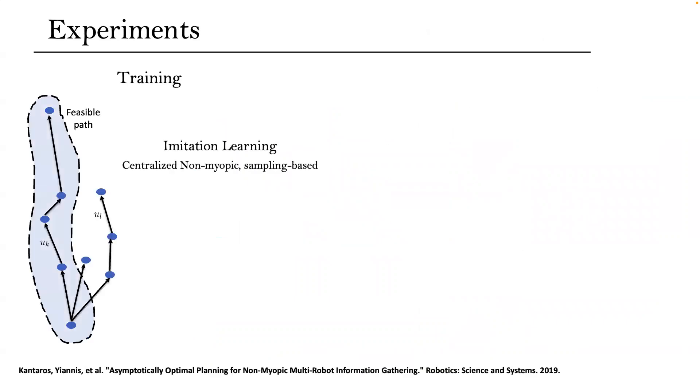We trained our network to imitate a centralized sampling-based algorithm thanks to its efficiency in retaining optimal paths. It should be emphasized that the network is trained on a team of 10 robots, 10 static targets on a 20 by 20 meters environment. For all experiments conducted, the same network has been utilized with zero fine-tuning.